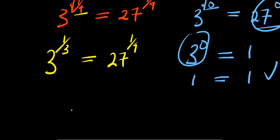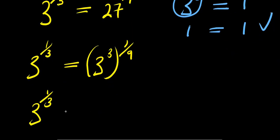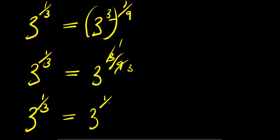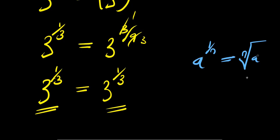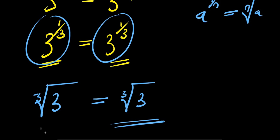Since 27 equals 3 power 3, we have 3 power (1 over 3) equals (3 power 3) raised to the power of (1 over 9), which gives 3 power (3 times 1 over 9), that is 3 power (3 over 9), which simplifies to 3 power (1 over 3). So we have 3 power (1 over 3) equals 3 power (1 over 3). Using the identity a power (1 over n) equals the nth root of a, both sides equal the cube root of 3 — they are the same, so this solution is verified.